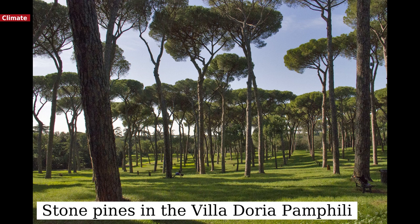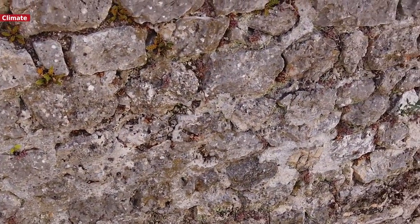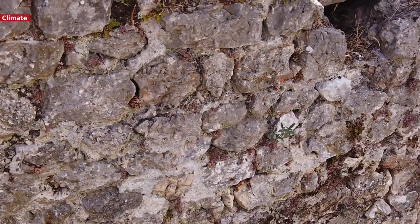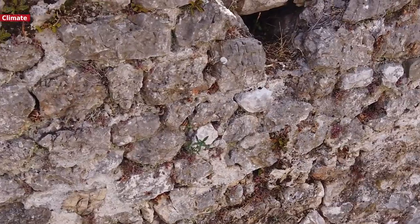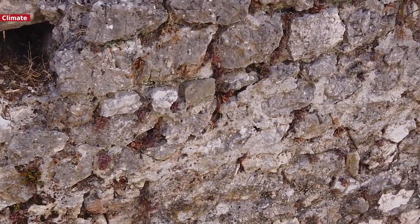Rome has a Mediterranean climate, with hot, dry summers and cool, mild, humid winters. Its average annual temperature is above 20 degrees Celsius during the day and 10 degrees Celsius at night. In the coldest month, January, the average temperature is 12 degrees Celsius during the day and 3 degrees Celsius at night. In the warmest months, July and August, the average temperature is 30 degrees Celsius during the day and 18 degrees Celsius at night.